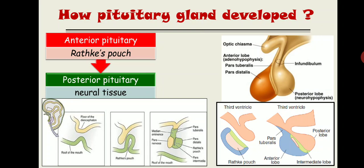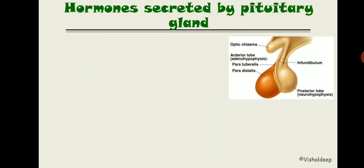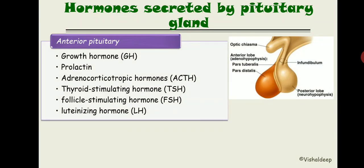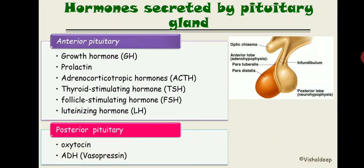Now let's see the list of hormones secreted by the pituitary gland. There are two parts: the anterior lobe and the posterior lobe. The anterior pituitary secretes six hormones: growth hormone, prolactin, ACTH, TSH, FSH, and LH (luteinizing hormone). The posterior pituitary secretes two hormones: oxytocin and ADH (antidiuretic hormone), also known as vasopressin.